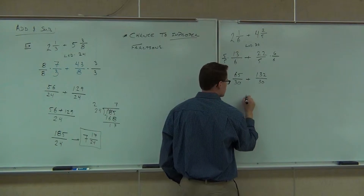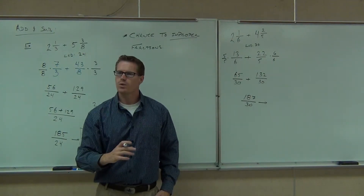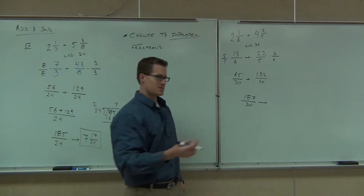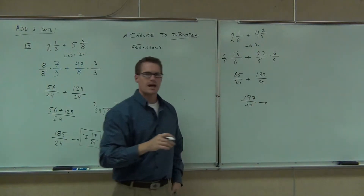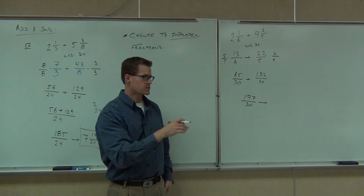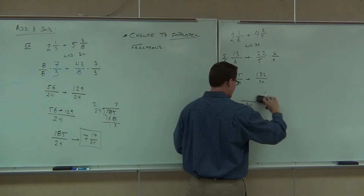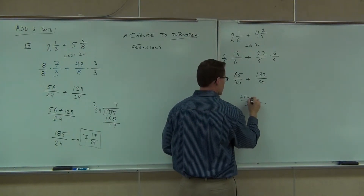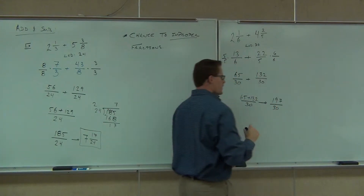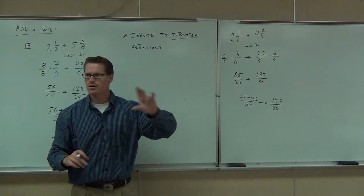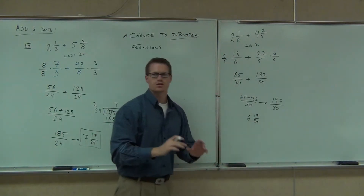That's going to give us — we're simply adding fractions like we know how to do. It's just that we're going to have a larger numerator before we make this into a mixed number. And we'll change that back into a mixed number. We'll figure out how many times 30 goes into that without going over. That's your final answer. It's as good as you can do on that problem.